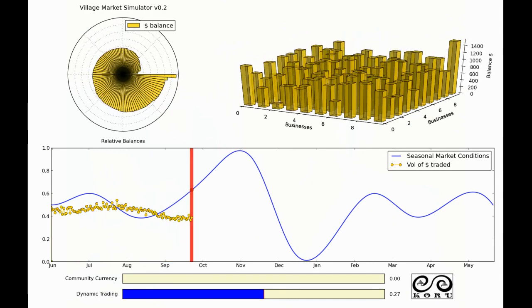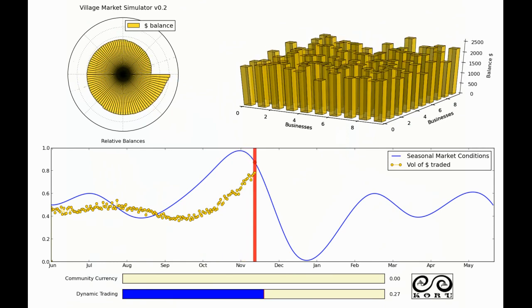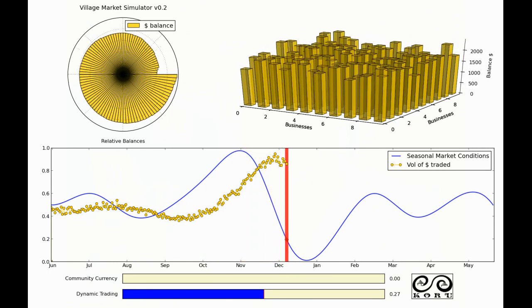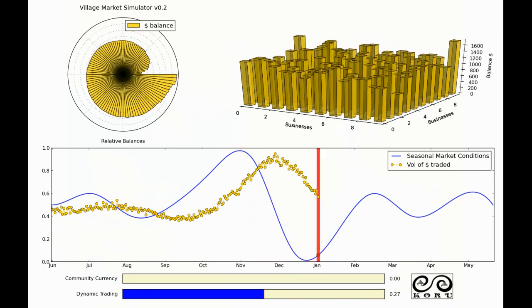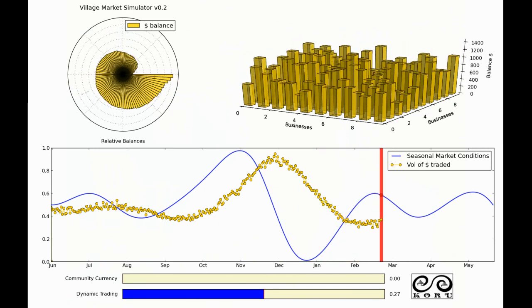And the amount they import and export varies throughout the year based on external market factors. And the blue line you see down here at the bottom is the relative amounts of those imports and exports throughout the year.